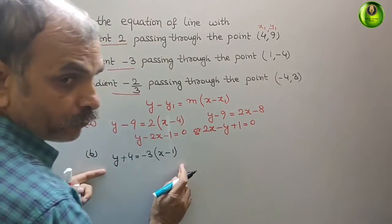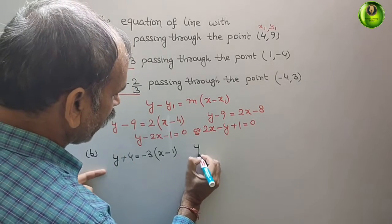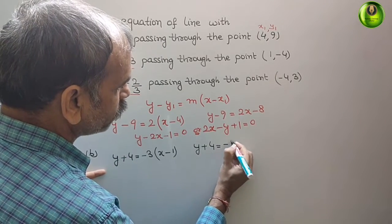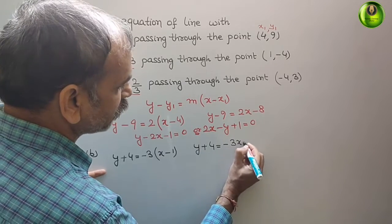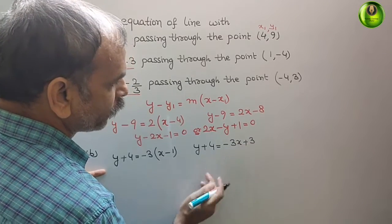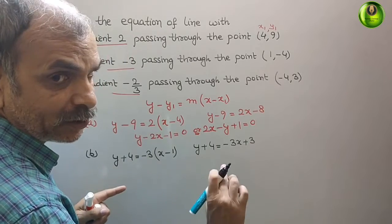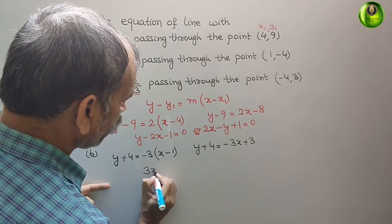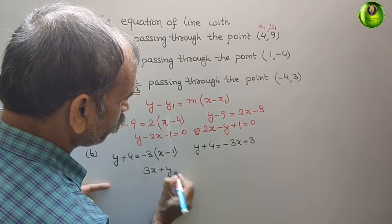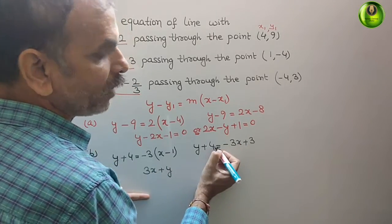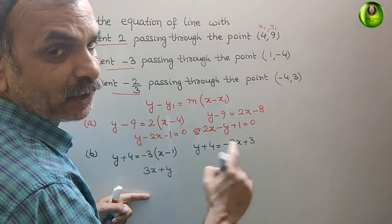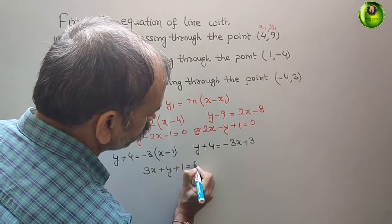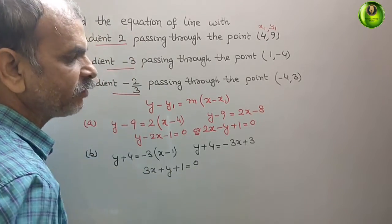Solve this. We will get y plus 4. That is equal to minus 3x plus 3. Bring this to this side and arrange it. So you will get 3x plus y and this is 4 and it will become minus 3. 4 minus 3 is plus 1. So here it will be equal to 0. So this is your second equation.